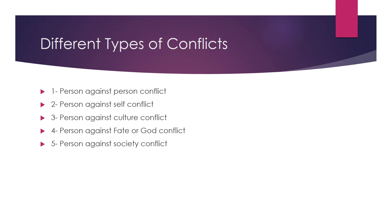These five types are the most apparent in this genre. Number one: person against person conflict. Number two: person against self conflict. Number three: person against culture conflict. Number four: person against fate or God conflict. And number five: person against society conflict. We are going to shed some light — just an introduction — about each point.